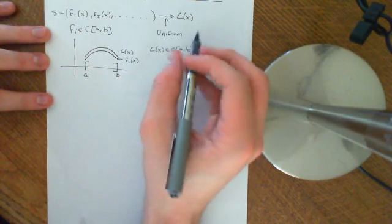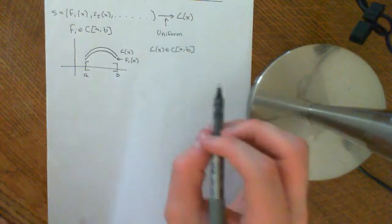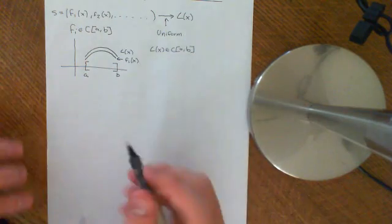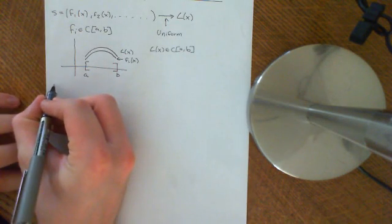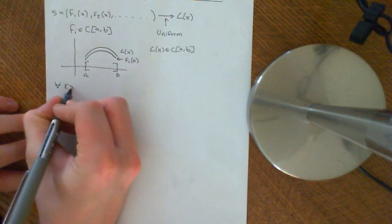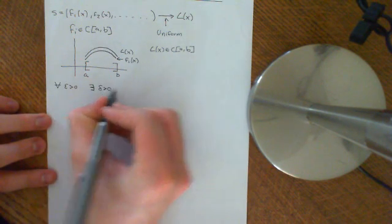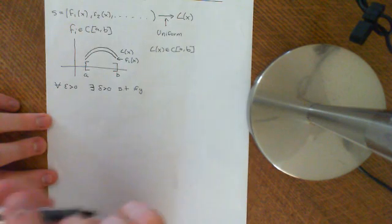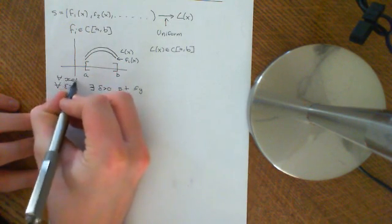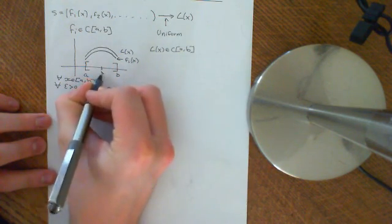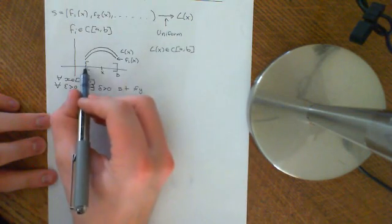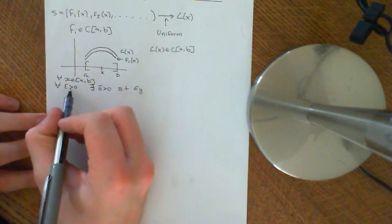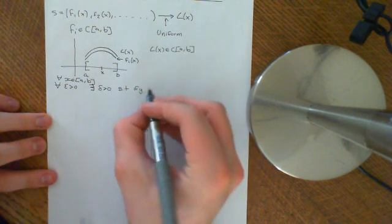So we're going to prove this result in this video. Firstly, let's revise what it means for a function L(x) to be continuous. What we want to show is that for all epsilon greater than 0, for all x in the interval A,B — so you choose any little x within this interval — the function L(x) being continuous on the entire interval AB means you pick any x in A,B.